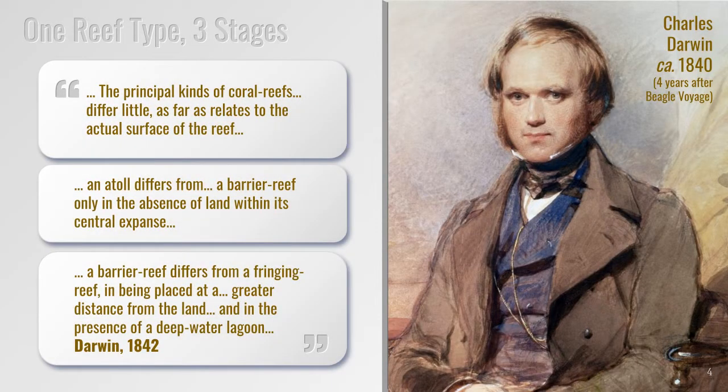In addition to this sequence, Darwin also claimed that the surface of these three reef types seemed identical, stating that the principal kinds of coral reefs differ little as far as it relates to the actual surface of the reef. An atoll differs from a barrier reef only in the absence of land within its central expanse, and a barrier reef differs from a fringing reef in being placed at a greater distance from the land and in the presence of a deep water lagoon. So the only difference he saw was in lagoon depths and distance from shore, implying there's really only one type of reef but with three stages of development.